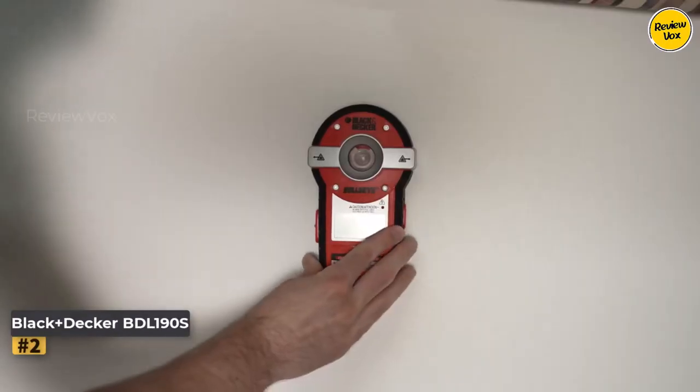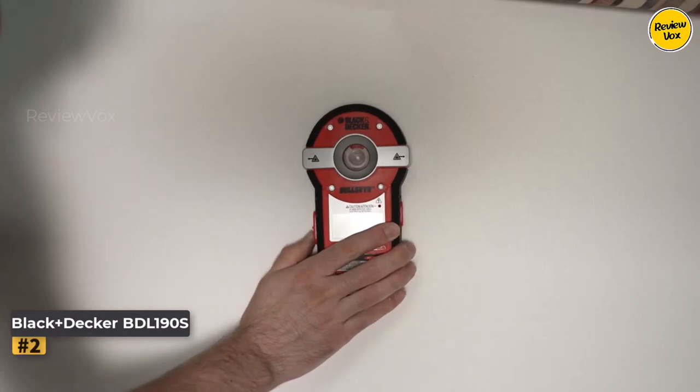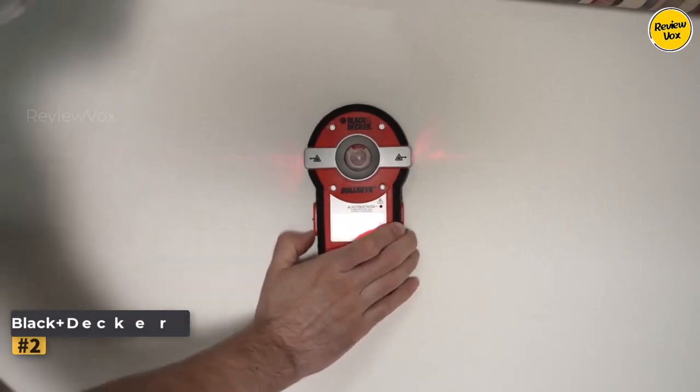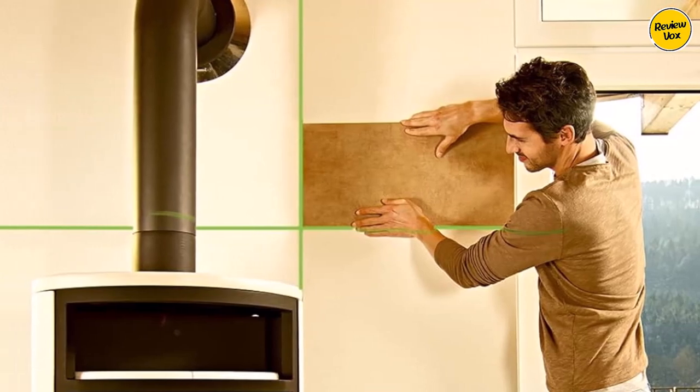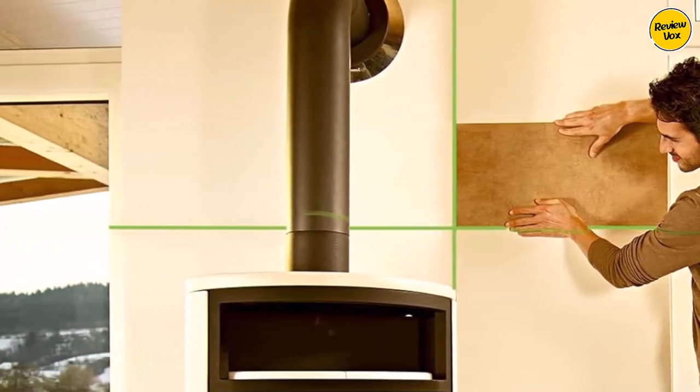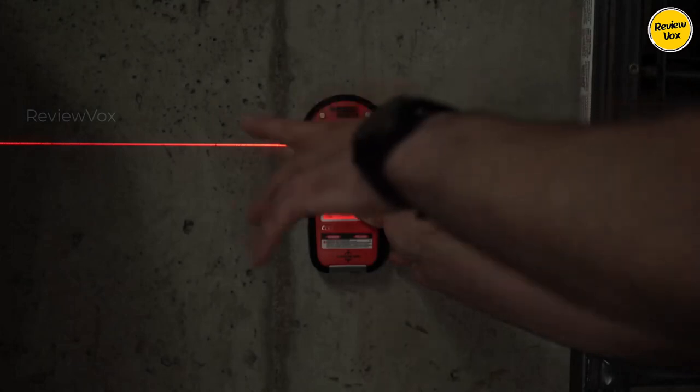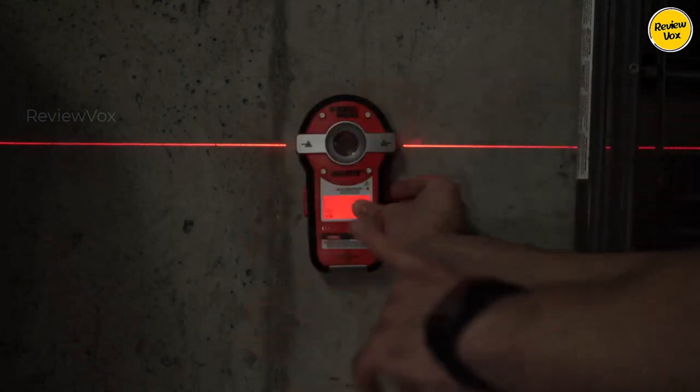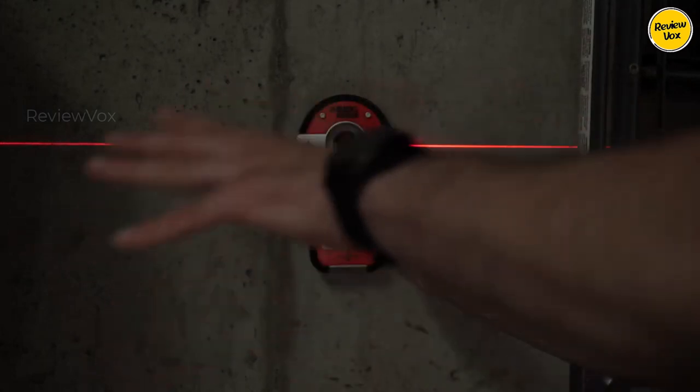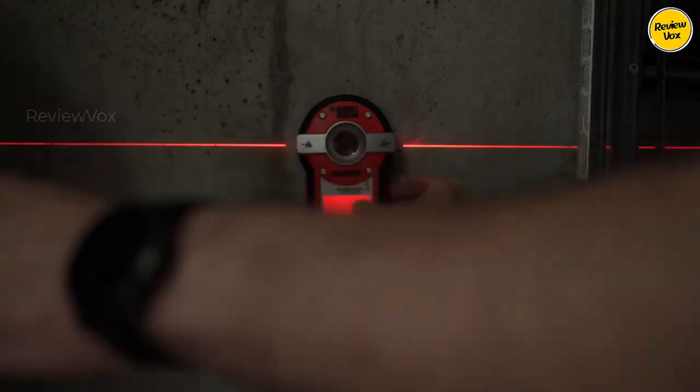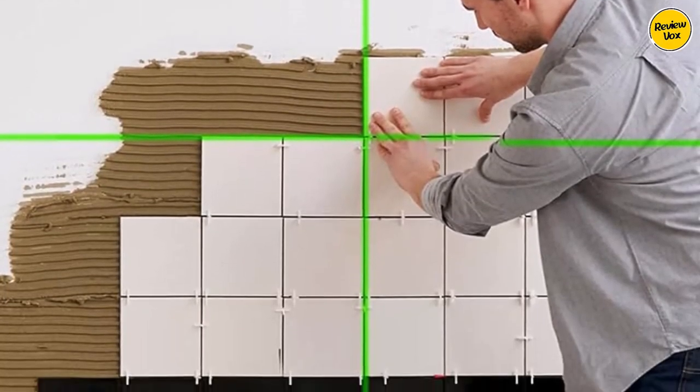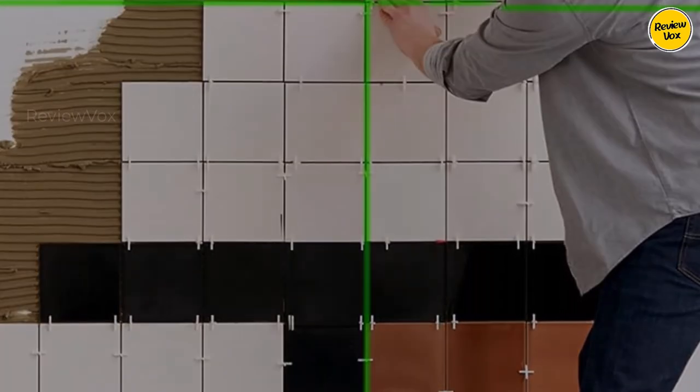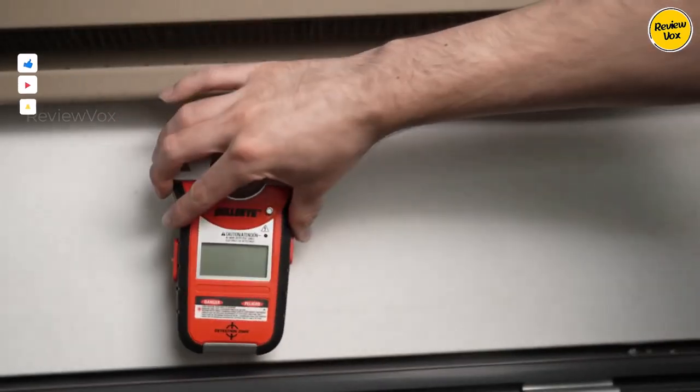Black Plus Decker Line Laser BDL-190S. This laser level is an ideal choice for anyone seeking a versatile tool for hanging pictures and performing DIY tasks around the house. What sets it apart is the inclusion of a stud finder, allowing users to avoid potential obstacles like wood or metal studs and live AC wiring before drilling into the wall. While it features a single, self-leveling line, the device is not short on practicality.